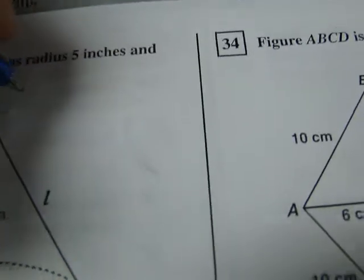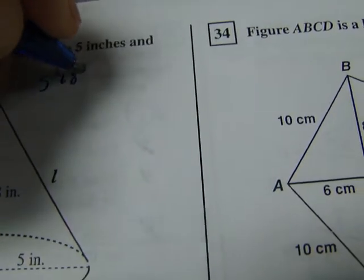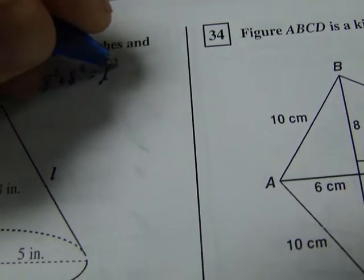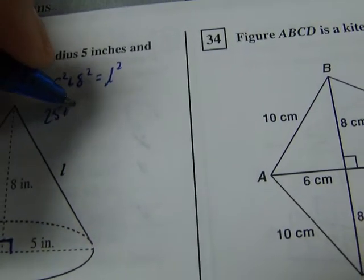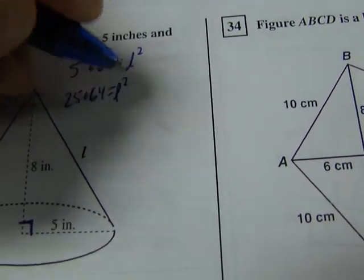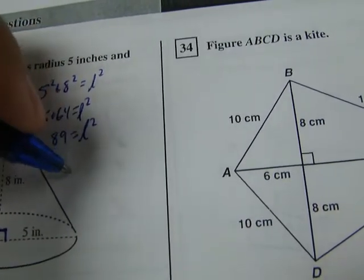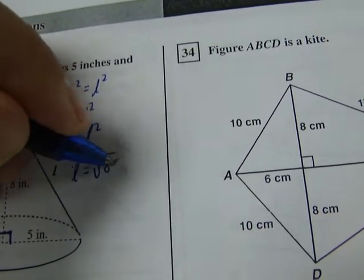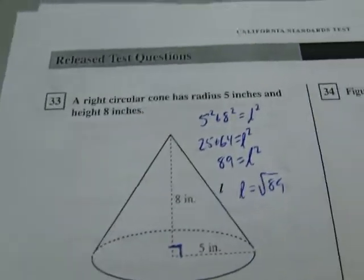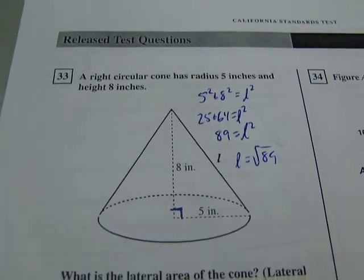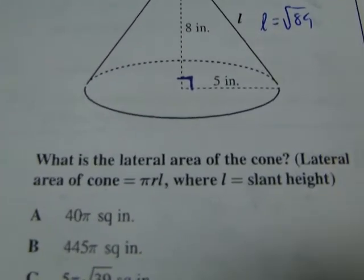That's right, Pythagorean Theorem. So 5 squared plus 8 squared equals L squared. That's 25 plus 64 equals L squared. That's 89 equals L squared. Therefore, L equals the square root of 89. We did that before we even read the rest of the problem because I was pretty sure we were going to have to solve it.